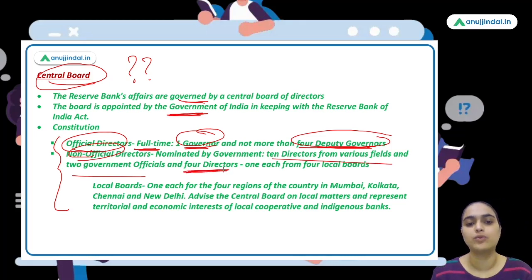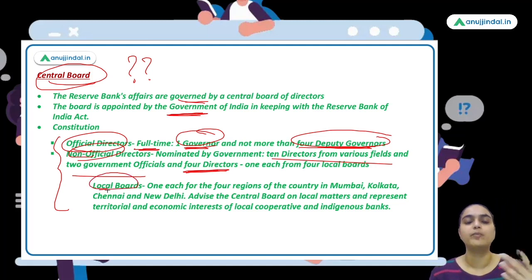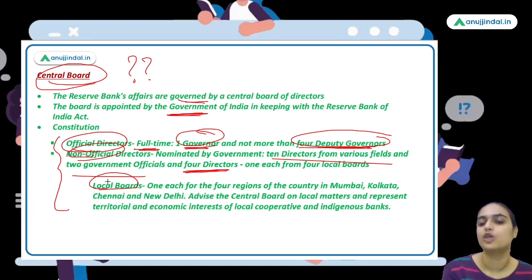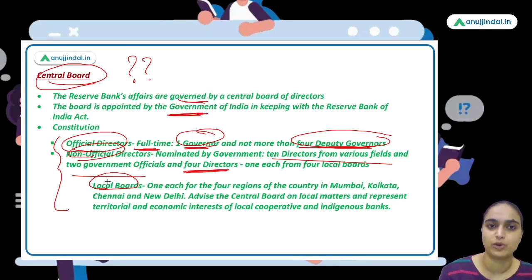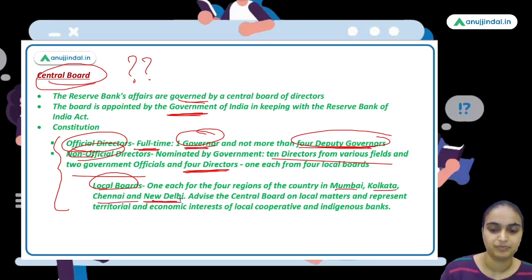Local boards advise the Central Board on matters relating to territorial or economic interests of local cooperative banks or indigenous banks in their region. There are four local boards — one each in Mumbai, Kolkata, Chennai, and New Delhi.